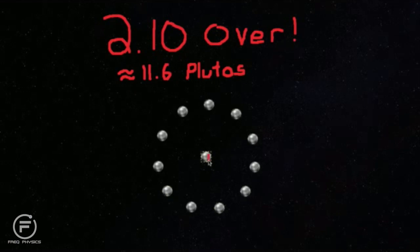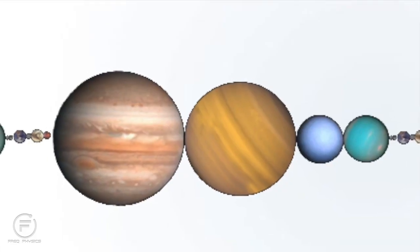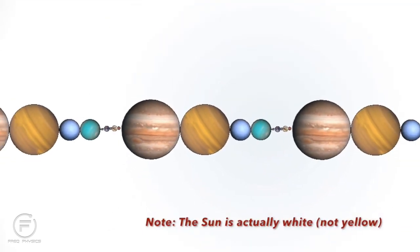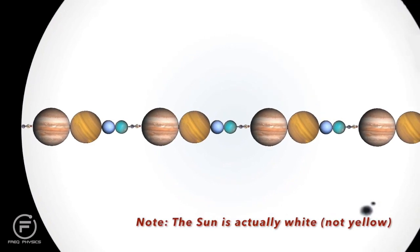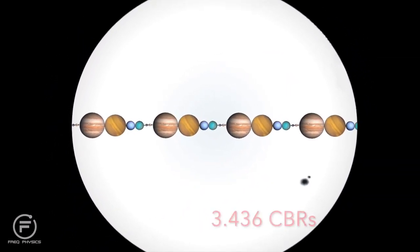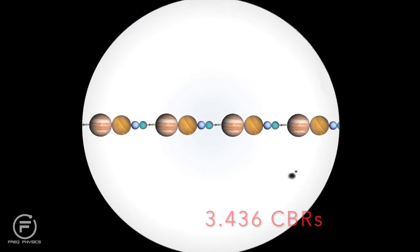Which means, if we divide the Sun's diameter by the number of Earth units that we have times the diameter of Earth itself, we find that we could fit the aligned planets inside the Sun 3.436 times.